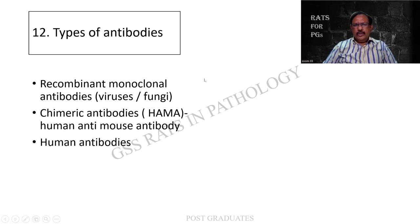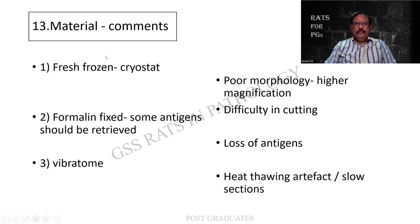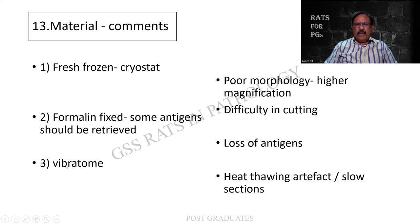Immunohistochemistry is not a special property of pathology alone - it can be used in microbiology as well. What are the common tissue types? One is fresh frozen tissue, formalin-fixed tissue, and vibratome-derived tissue. A fresh frozen tissue through a cryostat has got poor morphology, but higher antigen preservation can be obtained. For formalin-fixed tissue, some antigens can be retrieved while others are not, so there is a loss of antigens. With the vibratome, there is heat-thawing artifact and slow development of the sections. So these three methods - cryostat, formalin-fixed, and vibratome - along with the disadvantages of each, I would like you to kindly mention.